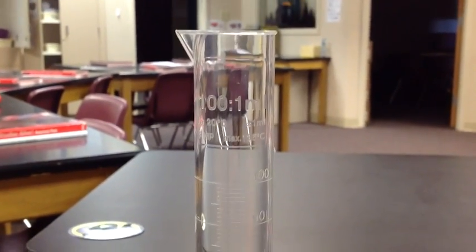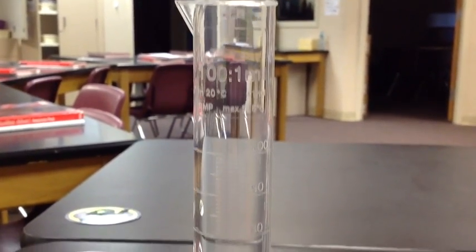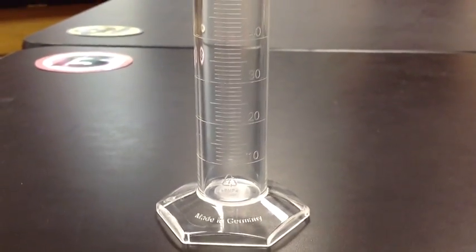This time we're going to learn how to use a graduated cylinder to find the volume of an irregular solid.